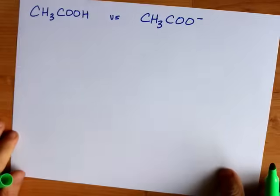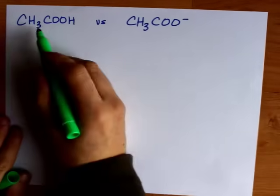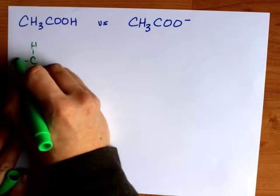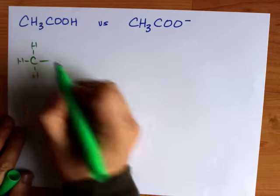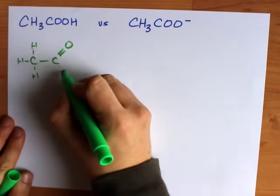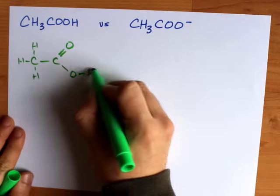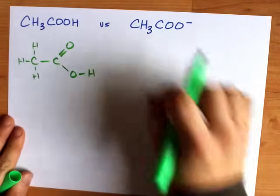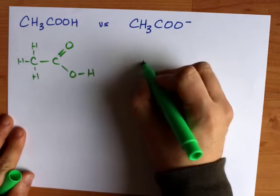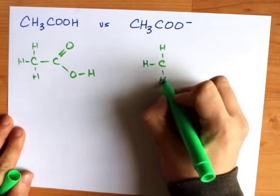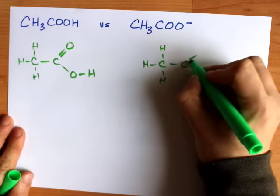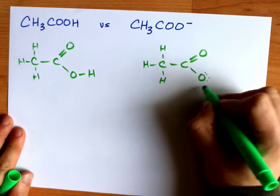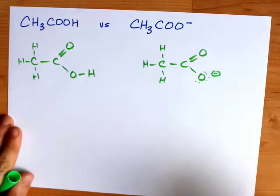This is the classic question for this. We have ethanoic acid here, which has the CH3 methyl group. You have a carbon that is double bonded to an oxygen and single bonded to an OH. But once you remove the H from it to get the ethanoate ion, you still have your methyl group on the left hand side. You have a double bonded O here, and you have a single bonded O here, but it has three lone pairs and a formal charge of negative one.